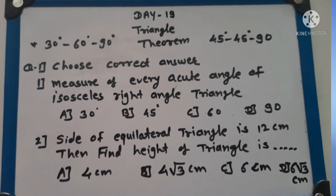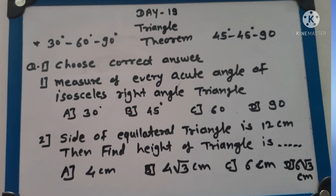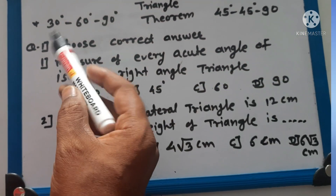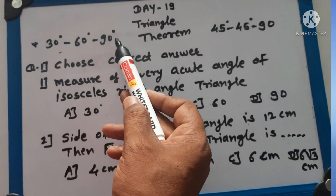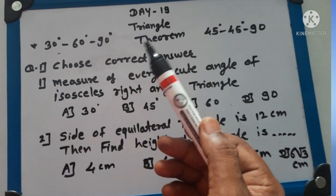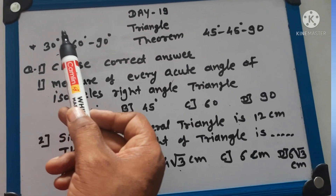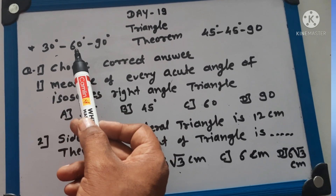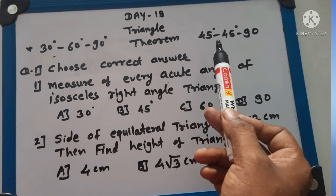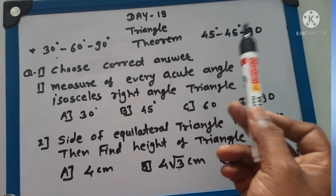Exercise number 19 is on triangles. In that triangle lesson, there are two theorems: first one is 30-60-90, and another one is 45-45-90. Opposite side of 30 degree angle is half of hypotenuse. Opposite side of 60 degree angle is root 3 upon 2 of hypotenuse. Opposite side of 45 degree angle is 1 upon root 2 of hypotenuse.